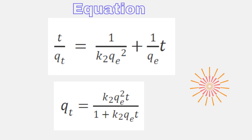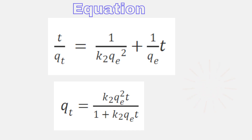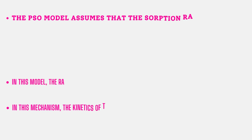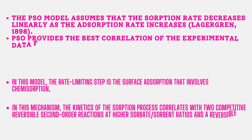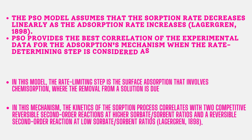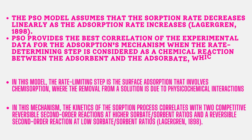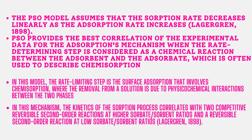If your equation fits the pseudo-second order model — which is easily evaluated by the R-squared value — then we can consider that the pseudo-second order model applies, where the adsorption rate decreases linearly as adsorption increases. The pseudo-second order model provides the best correlation of experimental data for adsorption mechanism when the rate determining step is considered as a chemical reaction between the adsorbent and the adsorbate, which is often used to describe chemisorption. That means if your data follows the pseudo-second order model, the reaction involves a chemisorption rate-limiting step.